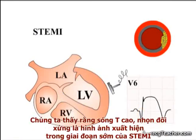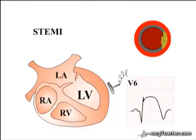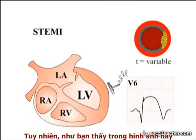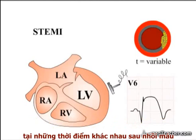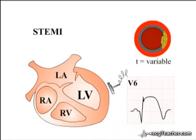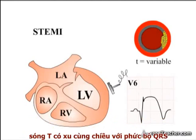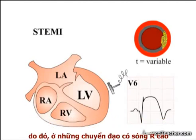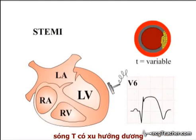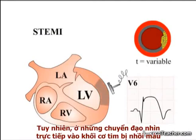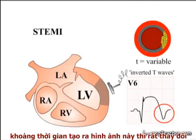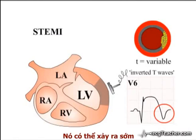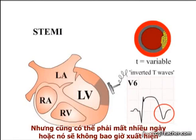Tall symmetrical peaked T waves are an early ECG finding in STEMI. As the process of infarction evolves, the T waves may demonstrate a further abnormality developing at a variable time point after occlusion. T waves are generally concordant with the QRS complex, so that in a lead with a dominant R wave such as V6, the T waves are normally upright. However, in a lead looking directly at an acute MI, the T waves may flip and become inverted. The timing of this phenomenon is highly variable — it may occur early in the hours following vessel occlusion, may take days to develop, or may not occur at all.